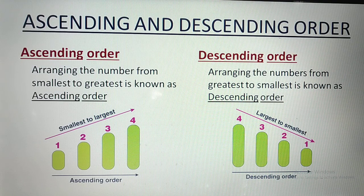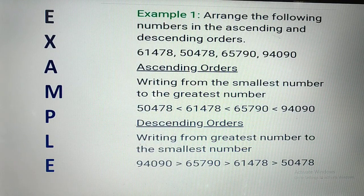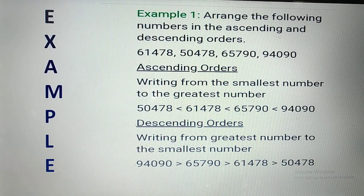Descending order is arranging the numbers from greatest to smallest. Largest to smaller. Now, examples: arrange the following numbers in ascending and descending order — 61,478; 50,478; 65,790; and 94,090.